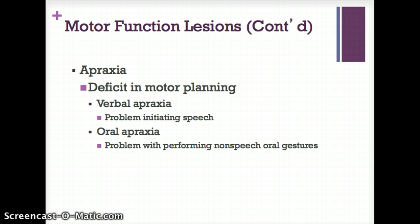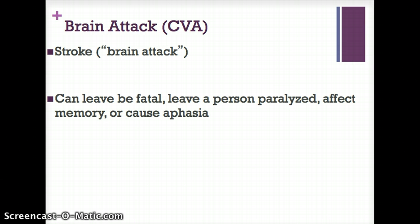Another thing that could happen with a neurological disorder affecting the brain is a CVA — a cerebrovascular accident, also called a stroke. A stroke occurs when the supply of oxygenated blood to the brain is interrupted. This can be fatal, leave the person paralyzed, affect their memory, or cause aphasia — an acquired language disorder resulting in impairment of language comprehension, formulation, reading, and writing.